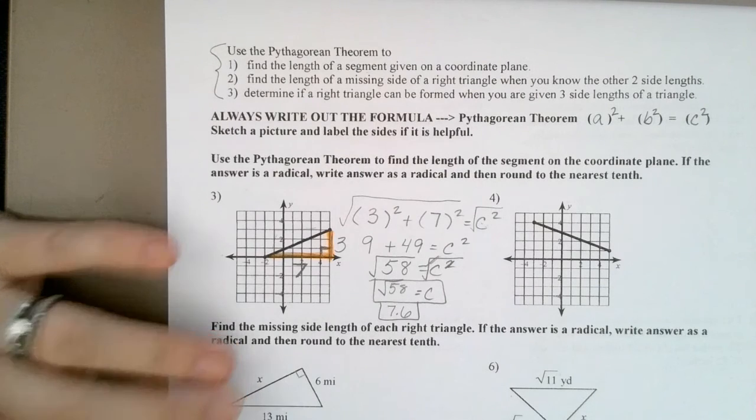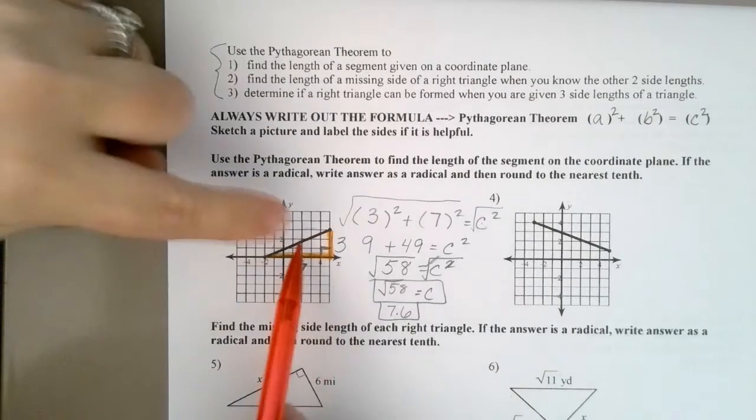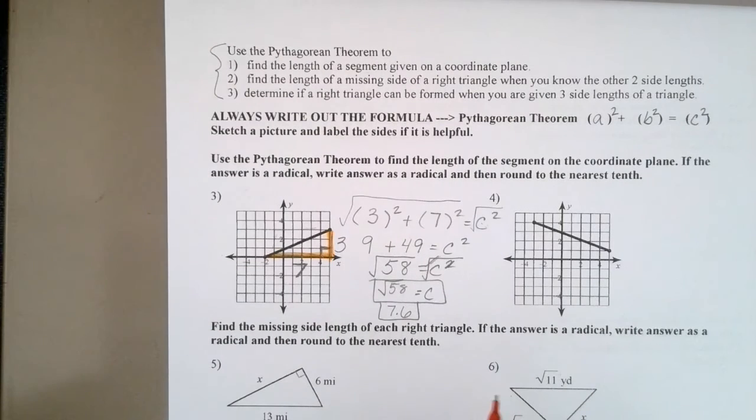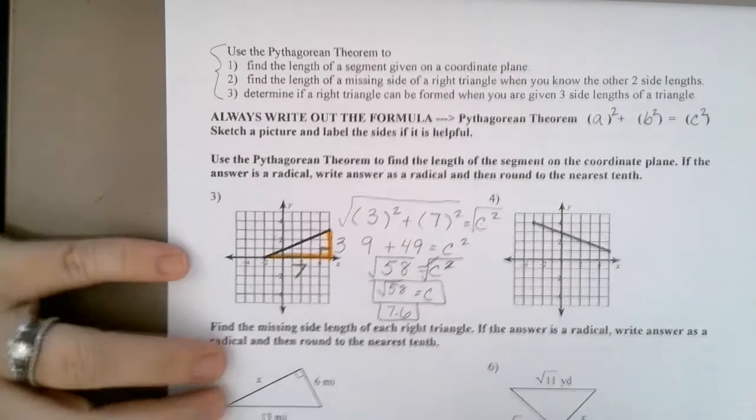A and B, it doesn't matter. The only thing that matters is that your hypotenuse is C. But A and B, it doesn't matter which is which.